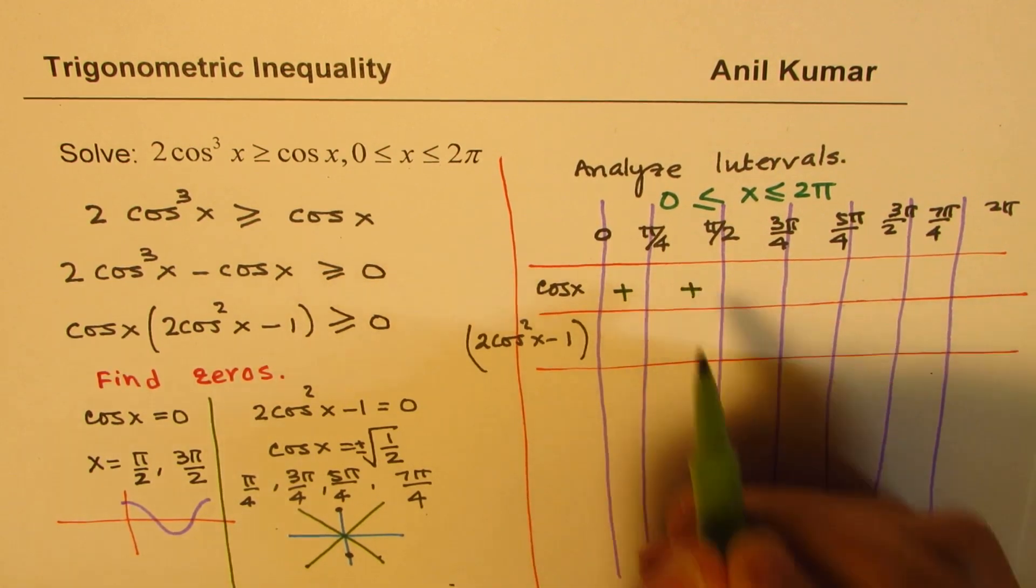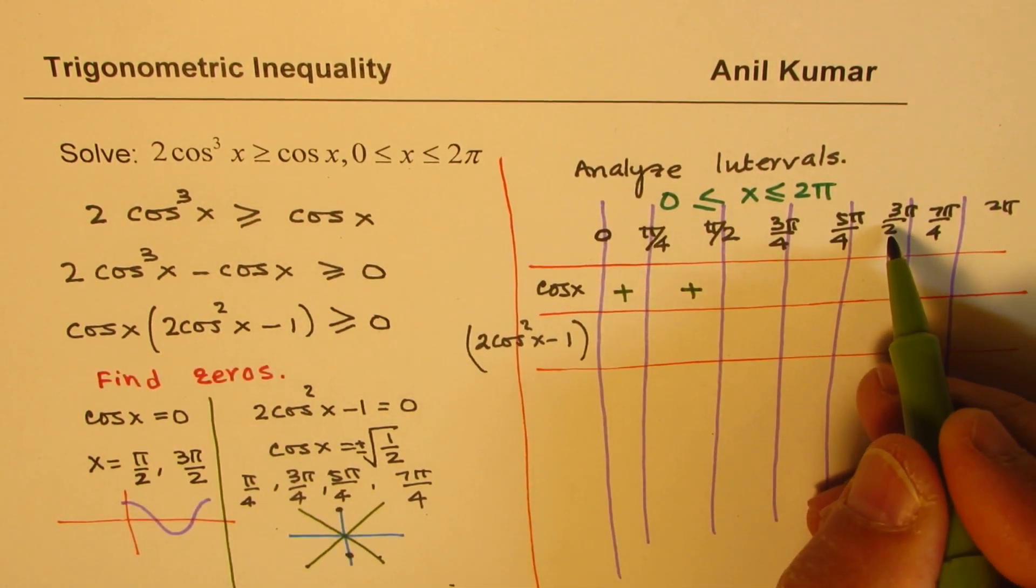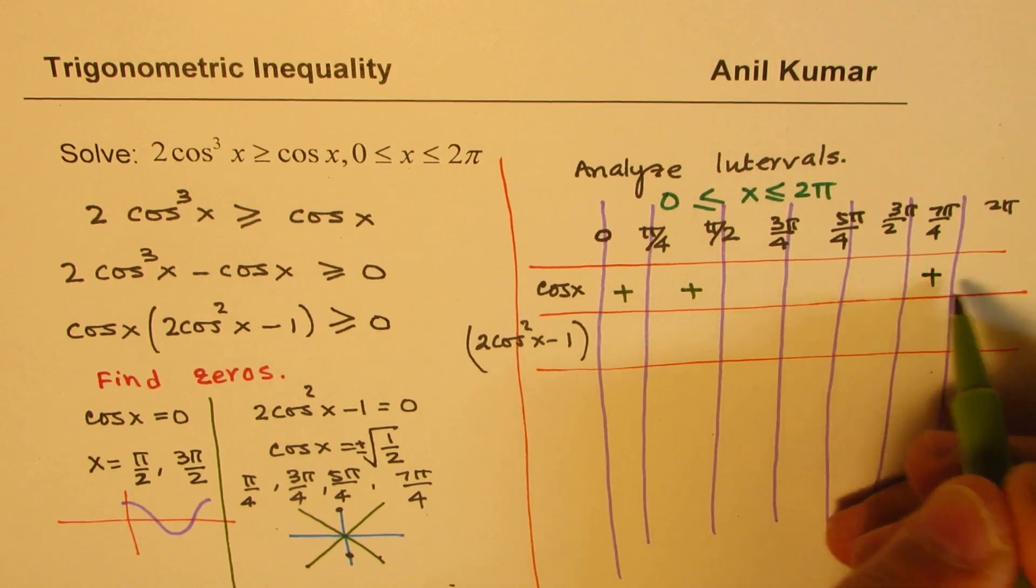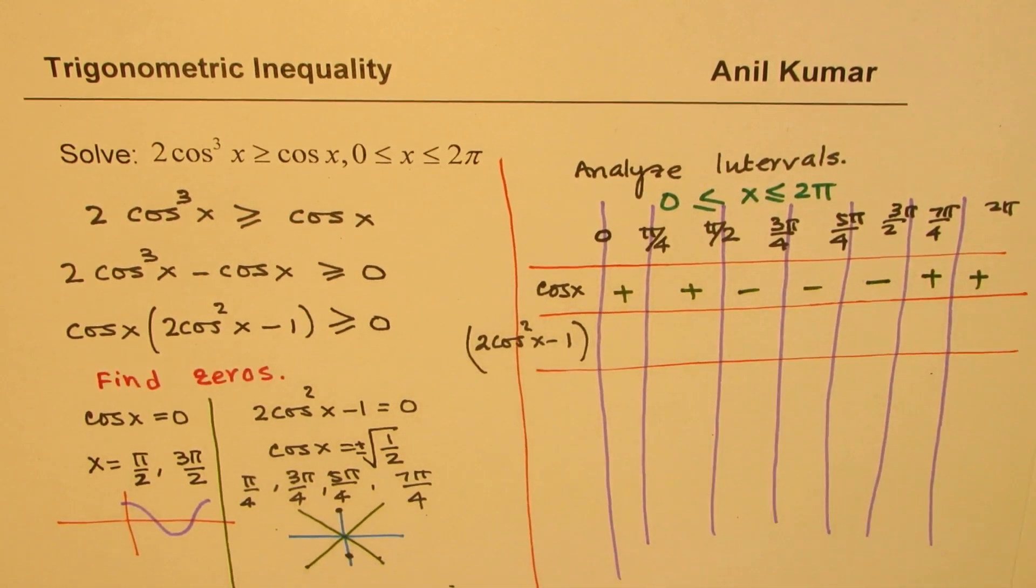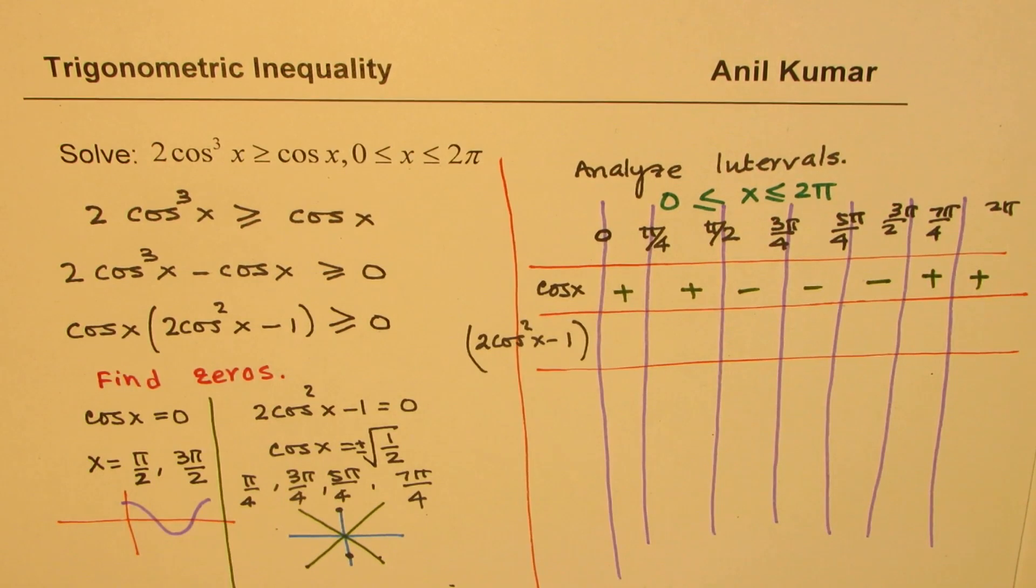So for cos x, this is positive. And then it is positive after 3π/2. So that means it is positive here. And in between it is negative. Is that clear to you?